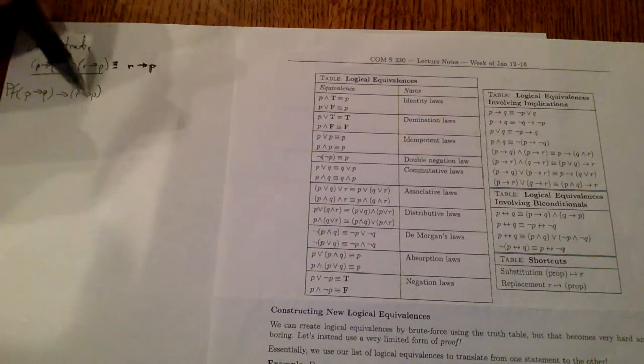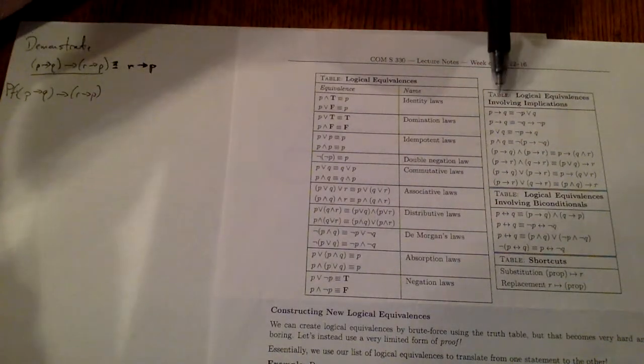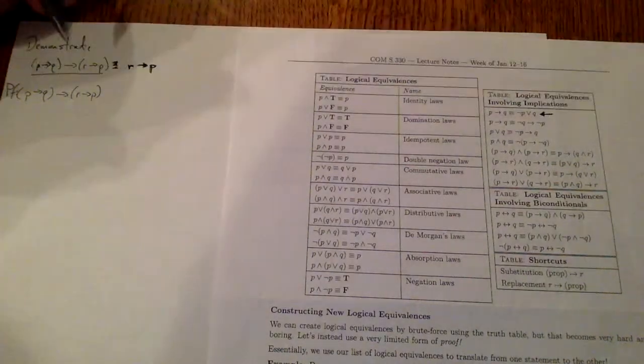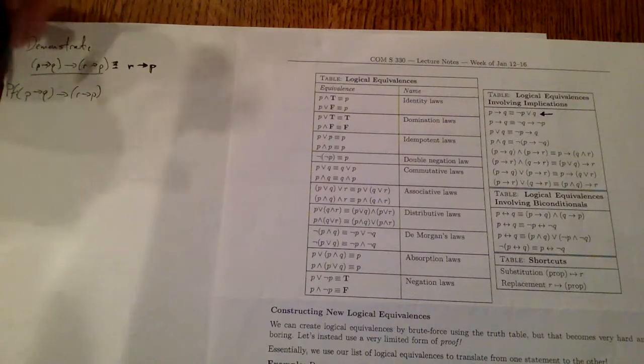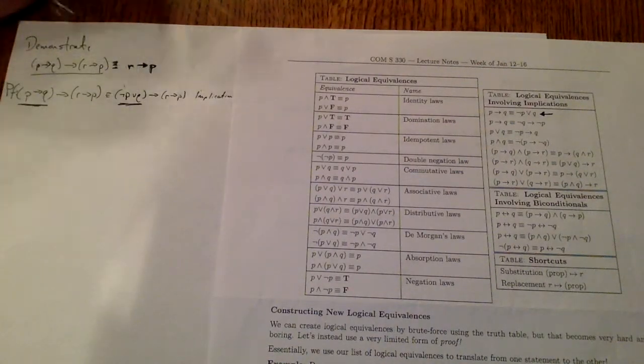So we start by writing our left-hand side, and we're going to follow some laws. The first thing we're going to do is take our logical equivalences using implications, and we're going to remove our implication statements using this law here. Let's do that a few times. I'll underline where it's important. First, I remove this conditional and replace it with this statement.